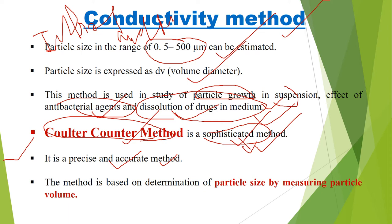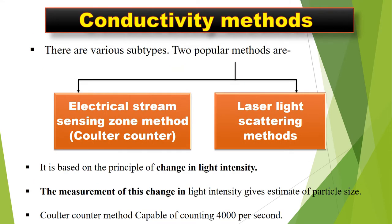The method is based on determination of particle size by measuring particle volume. If we measure the particle volume, then we can determine the particle size. There are two popular sub-types of conductivity methods that we will discuss.